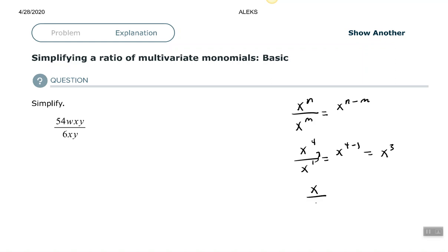Now, if you have just X to the first over X to the first, well, they cancel each other out. And if you subtract those, you see you get zero and anything, any base raised to the zero power is understood to be one. So you can just say they cancel each other out and that equals one.